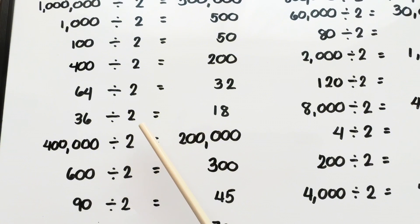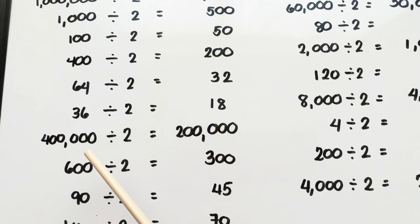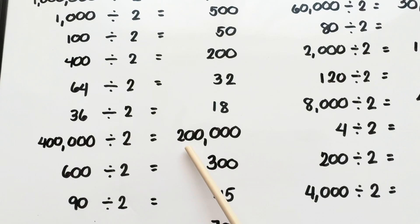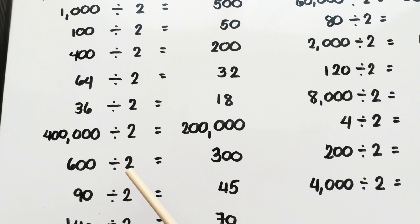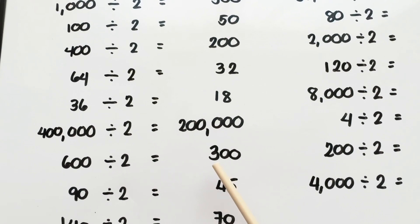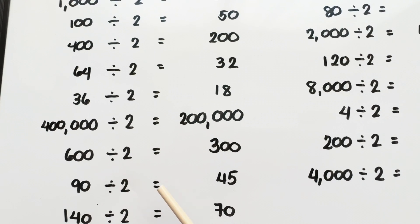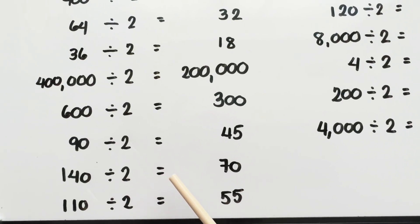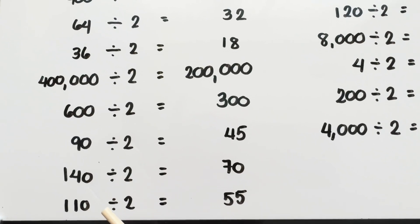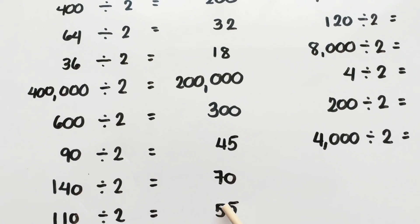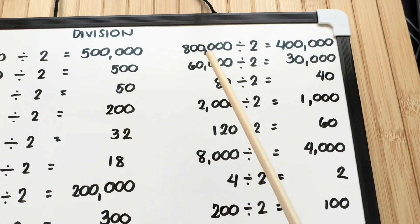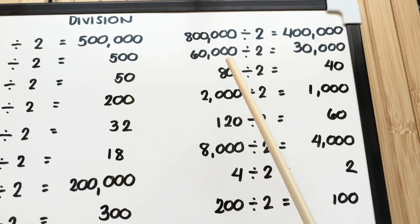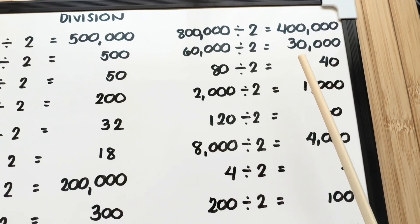400 divided by 2 is equals to 200. 64 divided by 2 is equals to 32. 36 divided by 2 is equals to 18. 400,000 divided by 2 is equals to 200. 600 divided by 2 is equals to 300. 90 divided by 2 is equals to 45. 140 divided by 2 is equals to 70. 110 divided by 2 is equals to 55. Next, 800,000 divided by 2 is equals to 400. 600,000 divided by 2 is equals to 30,000.